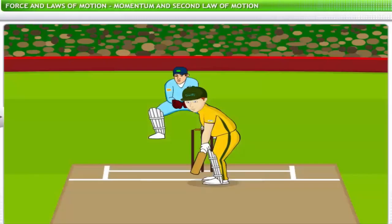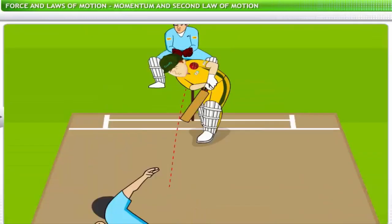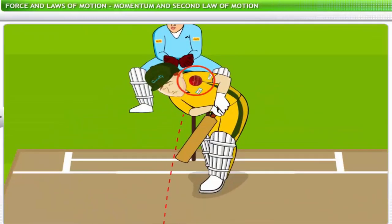A cricket bowling technique devised in the 1930s called bodyline involved aiming fast-paced balls at the shoulders of the batsmen. In the past, many batsmen have been injured due to the impact of balls traveling with high momentum. In this lesson you will learn about momentum and the second law of motion.